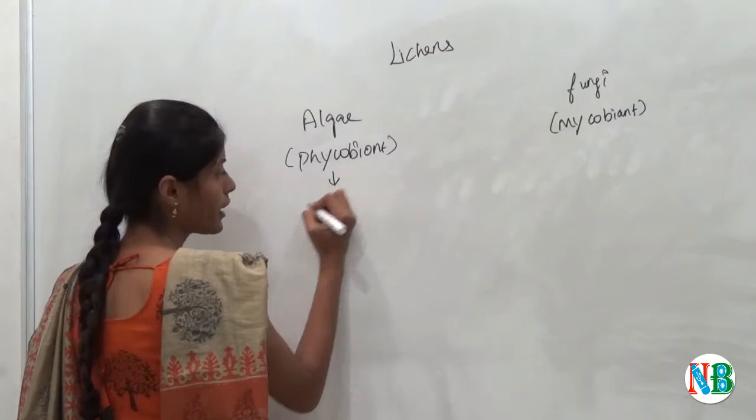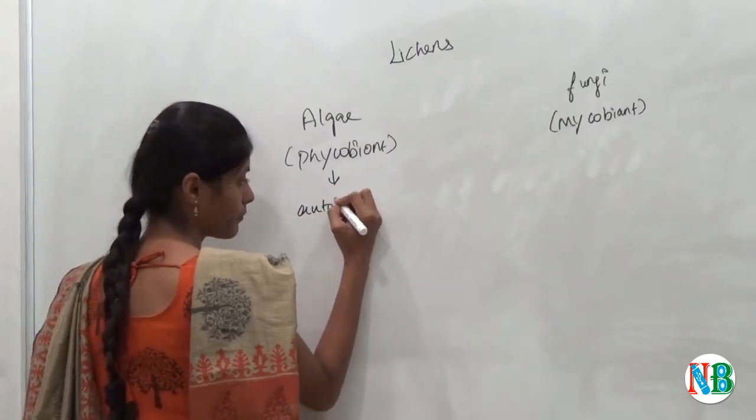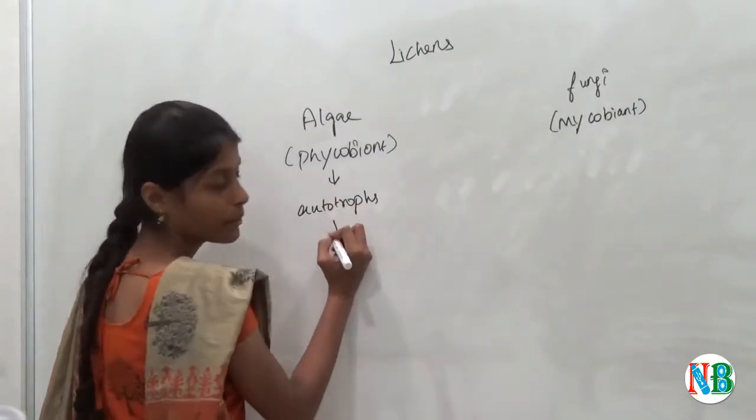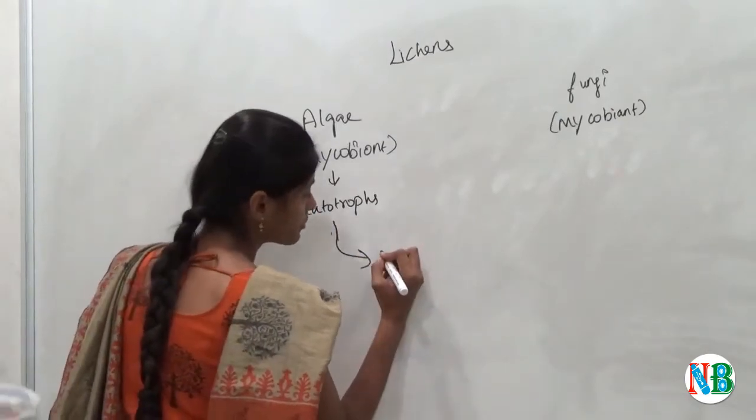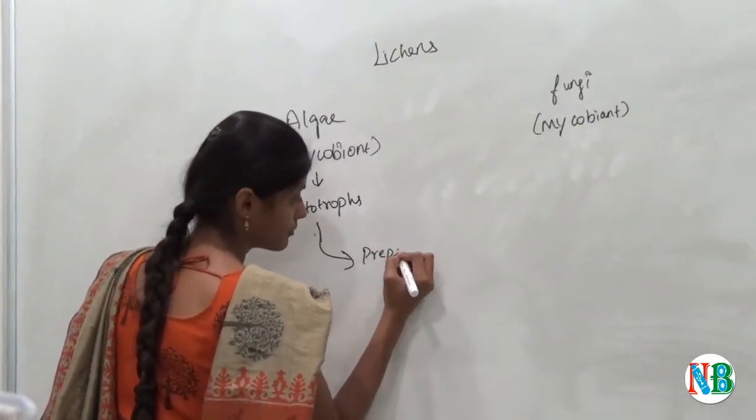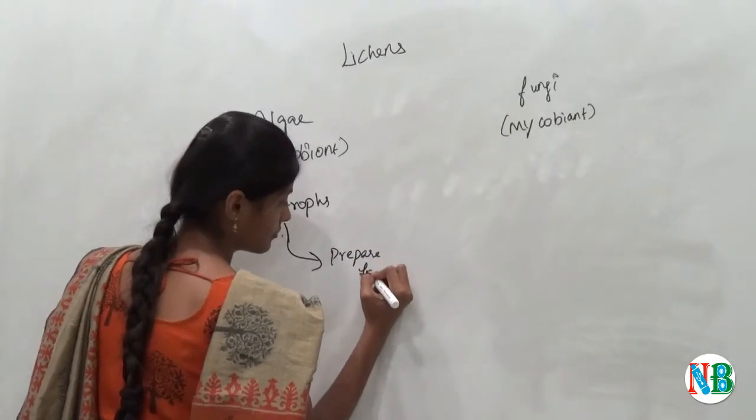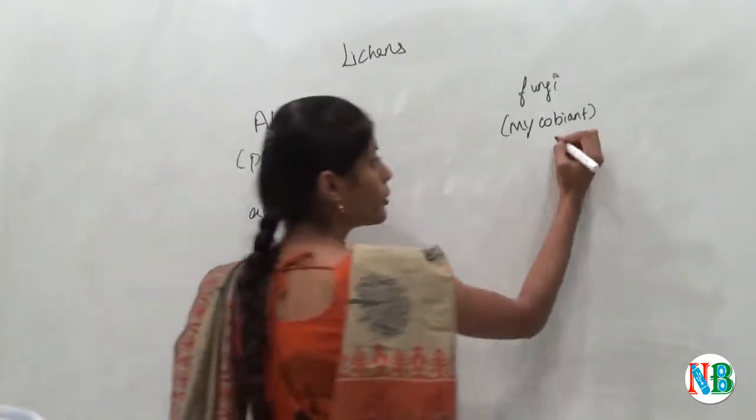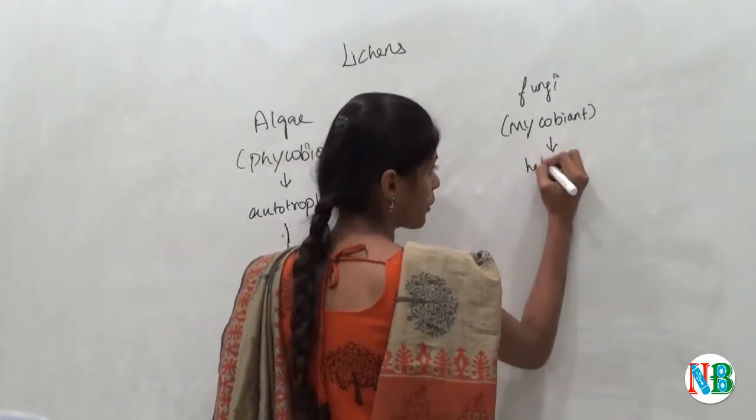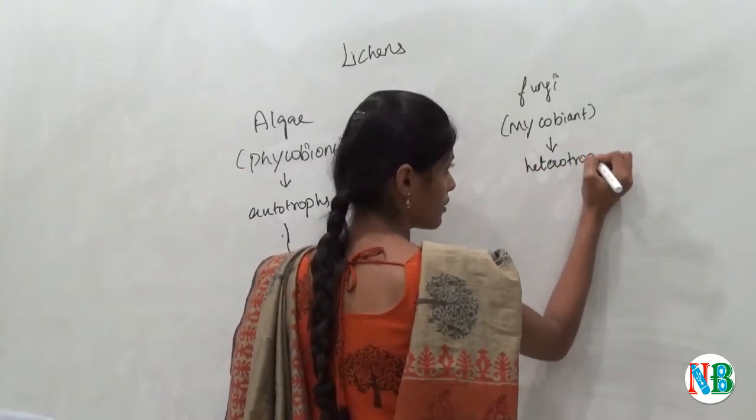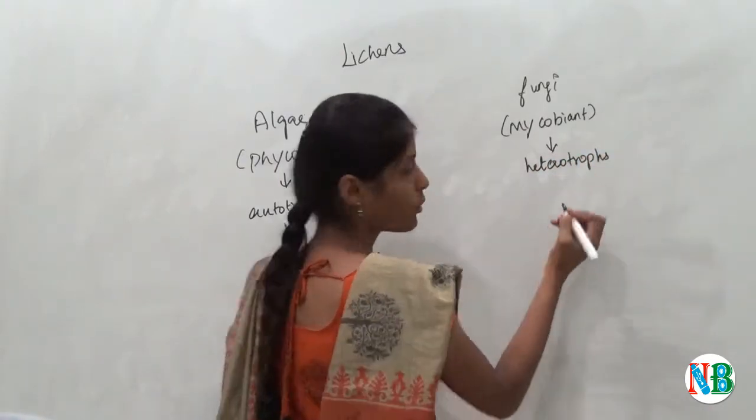Algae are phycobiont and they are autotrophs, so they can prepare food. Mycobiont or fungi are heterotrophs, so they cannot prepare food by their own.